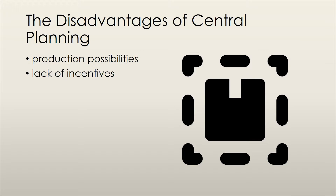Historical evidence suggests that central planning does not work very well in the long run because the central planners don't know people's production possibilities and their preferences. Thus, resources are misallocated and the economy ends up producing at a point inside the PPF. Additionally, centrally planned economies ignore the concept of incentives. Thus, any firm within the economy would not be functioning as efficiently as possible — there would be no incentive to become more efficient in producing a given good, and old and outdated methods of production would continue to be used. This is only one example of the inefficiencies caused by a lack of incentives.